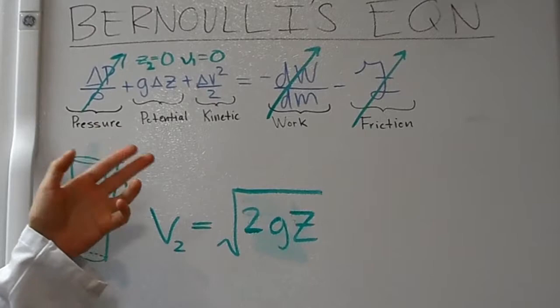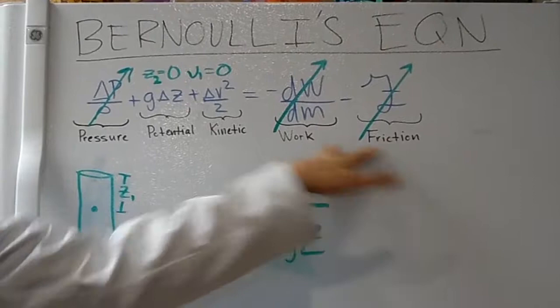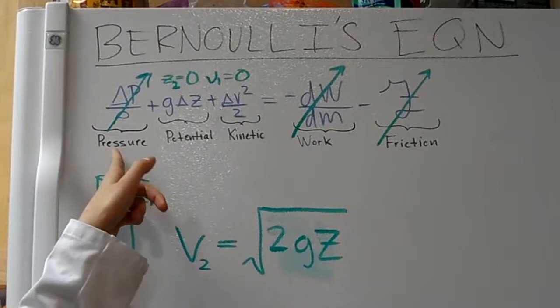Step by step, I'm going to show you how to derive Torricelli's equation from Bernoulli's equation. We're going to assume that work and friction don't play a part in the system, so we're going to set those equal to zero.